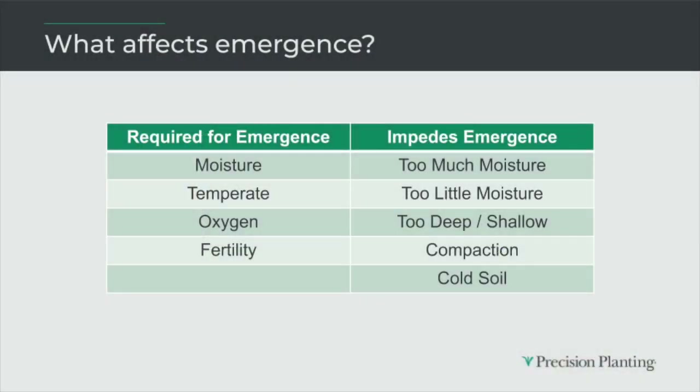It's moisture, oxygen, and temperature — maybe a little fertility — that's what's required to hit emergence. If we miss it shallow, we're in light moisture and behind. If we're too heavy and go too deep, we can get into an anaerobic environment. If we're in cold soils, we get chilling issues. We've got to balance all of those risks, which you're already doing today.